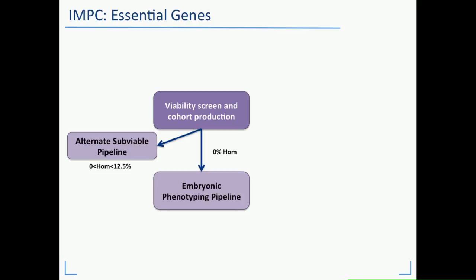One thing became very apparent early in the process: when we're producing our cohorts, we're going to identify a large number of cases. We predicted somewhere around a third where we'd see either zero homozygote animals coming through, or the very interesting case of our subviable lines — those where we get less than half the expected Mendelian ratios of homozygotes. The question was: what can we do with this, and will we see the same numbers of lethal strains as predicted from the literature?